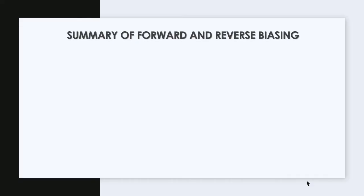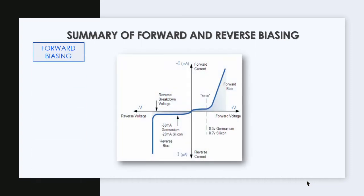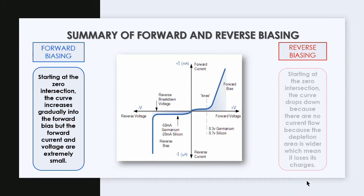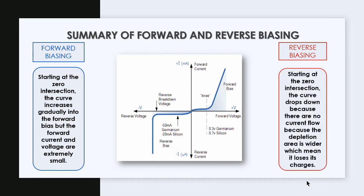Summary of forward and reverse biasing: For forward biasing, starting at zero, the curve increases gradually into the forward bias, though the forward voltage and current are extremely small initially. For reverse biasing, starting at zero, the curve drops down because there is no current flow as the depletion area is wider, which means it loses its charges.